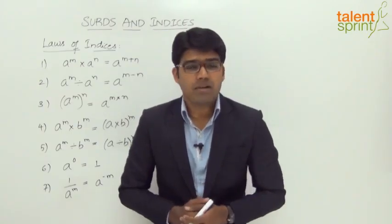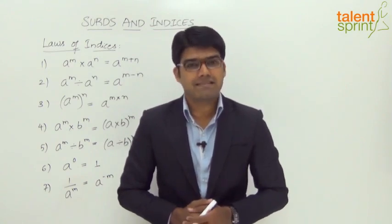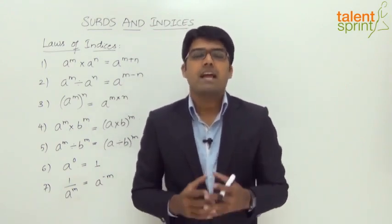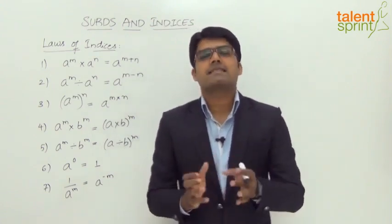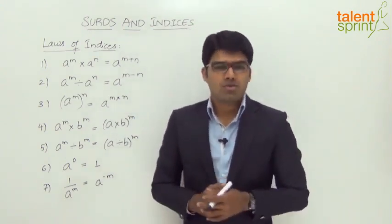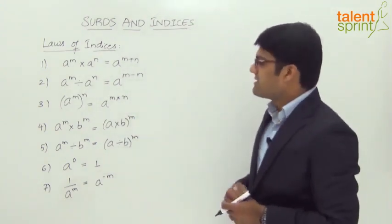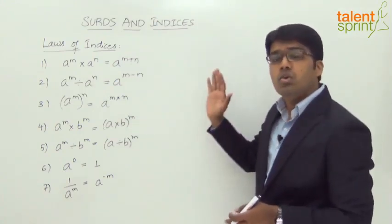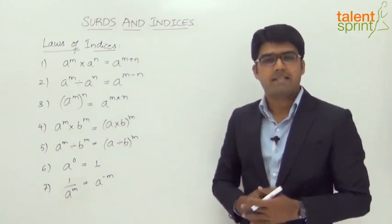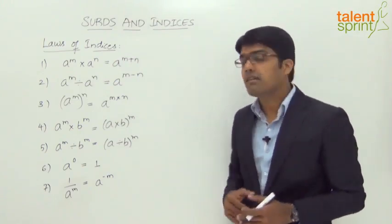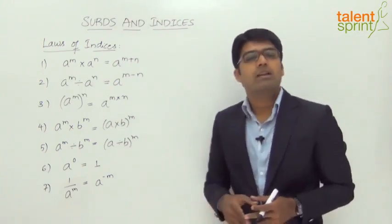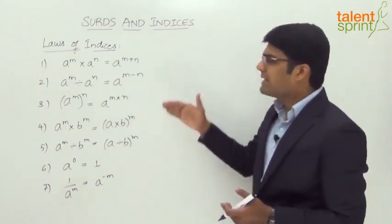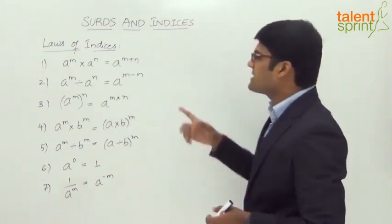Now that we have learned what is meant by a surd and what is an index, let's look at the laws of surds and the laws of indices. Let's start with the laws of indices. We have seven different rules of indices, and as mentioned earlier, these would be handy while doing simplifications related to indices. Let's look at them one by one.